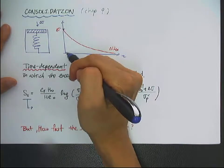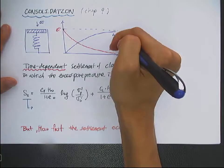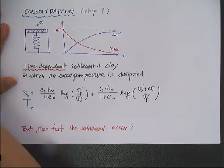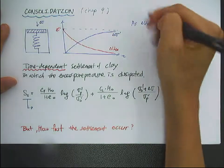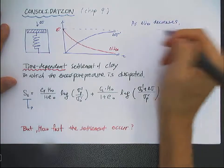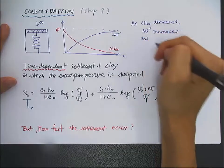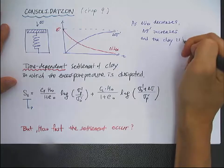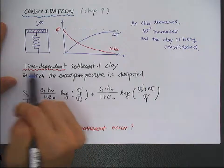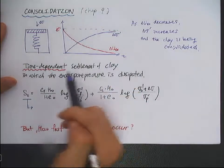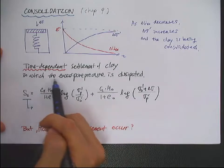As the water escapes, this excess pore pressure dissipation will be transferred to the vertical effective stress increase. So you have another curve. If this is the total stress, you have a curve increasing the vertical effective stress. As Delta U excess decreases, Delta Sigma prime, the effective stress, increases. The clay is being consolidated — it is called the time-dependent settlement of clay because it takes time to achieve the ultimate settlement, controlled by the rate of excess pore pressure dissipation.